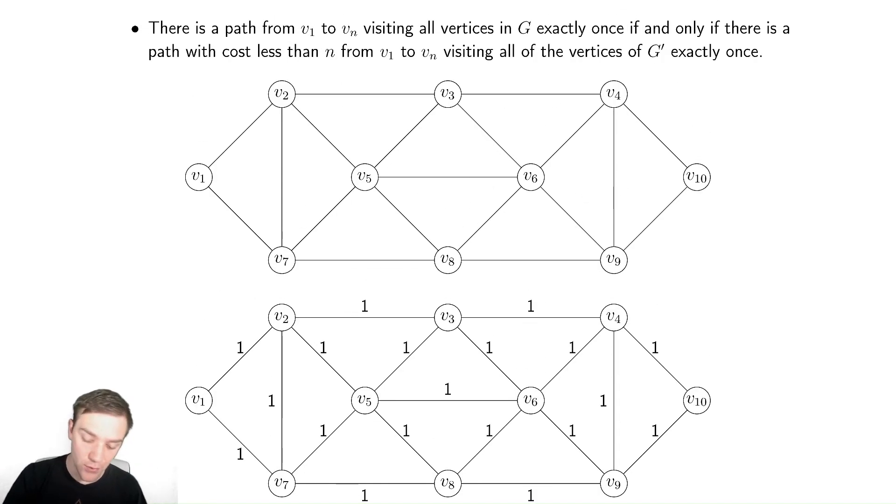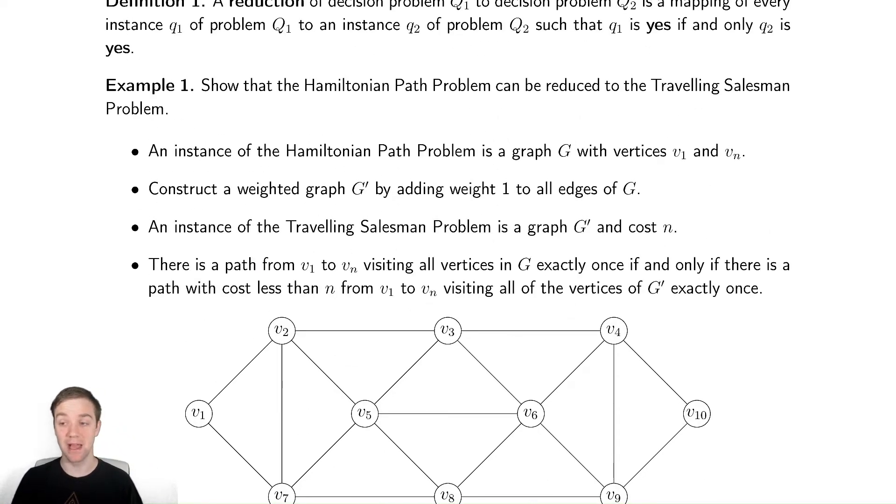So with this, if you give me a Hamiltonian path problem, I can solve the traveling salesman problem instead. And then I can solve the Hamiltonian path problem. This is called a reduction. We're reducing the Hamiltonian path problem to the traveling salesman problem. This does not mean that the thing we're reducing it to is necessarily easier. It's just saying all I care about is that I can solve this other problem.